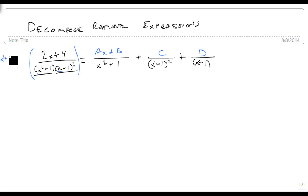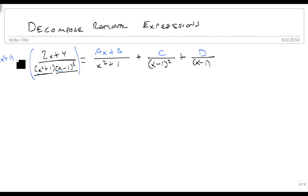And again, we multiply both sides by that denominator. And that means that we're going to multiply each piece by what it's missing. So we get 2x plus 4 equals the ax plus b that's already there times the piece that it's missing, which is the x minus 1 squared, plus the c times the piece it's missing, which is just the x squared plus 1, plus the d times what it's missing, which is the x squared plus 1 and a single x minus 1.